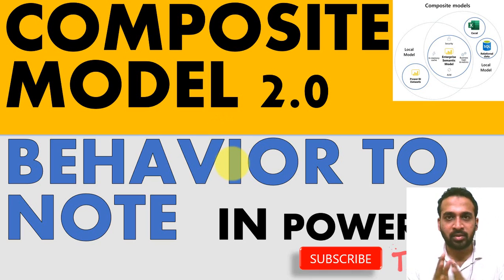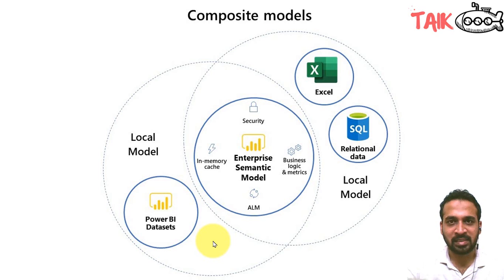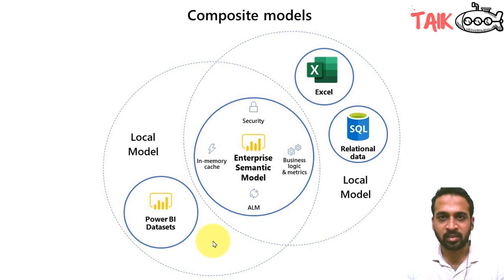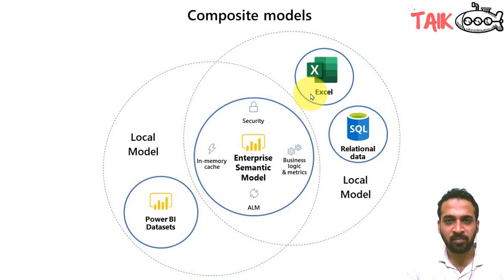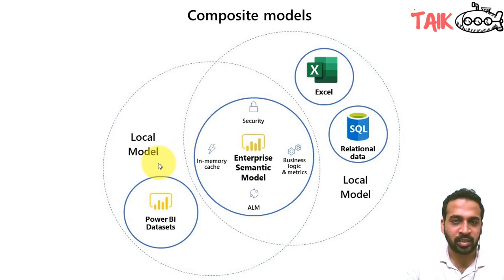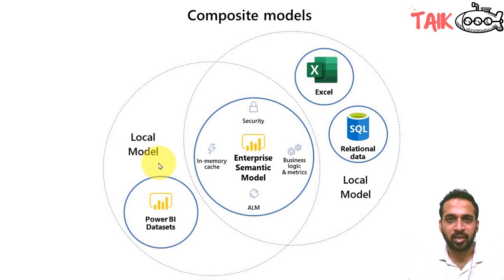This video is only about the theoretical side. If you want to go to the practical, just check out the link given in the video description below. Here is a sample of the composite model — it has, for example, a dataset live-connected from the Power BI service, and then you are adding a local dataset from there using an Excel file, a SQL file, or a local text file. You can combine everything together and make a new report out of it. That's the new thing here.